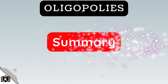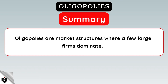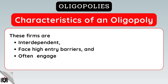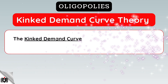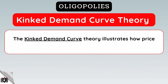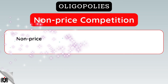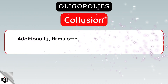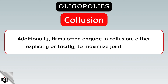In conclusion and just to recap: oligopolies are market structures where a few large firms dominate. These firms are interdependent, face high entry barriers, and often engage in non-price competition to attract customers. The kinked demand curve theory illustrates how price changes can impact demand elasticity differently. Non-price competition through advertising, product innovation, and customer service is vital. Additionally, firms often engage in collusion, either explicitly or tacitly, to maximize joint profits.